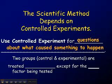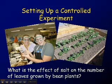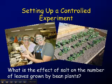Both groups are treated identically to each other except for one factor that's being tested. So if you were going to set up a controlled experiment, for example, on figuring out what's the effect of adding salt on these poor innocent little green plants in this garden bed — how would it affect the number of leaves grown by the bean plants? So we're wondering: what's the effect of salt on the number of leaves grown by bean plants?